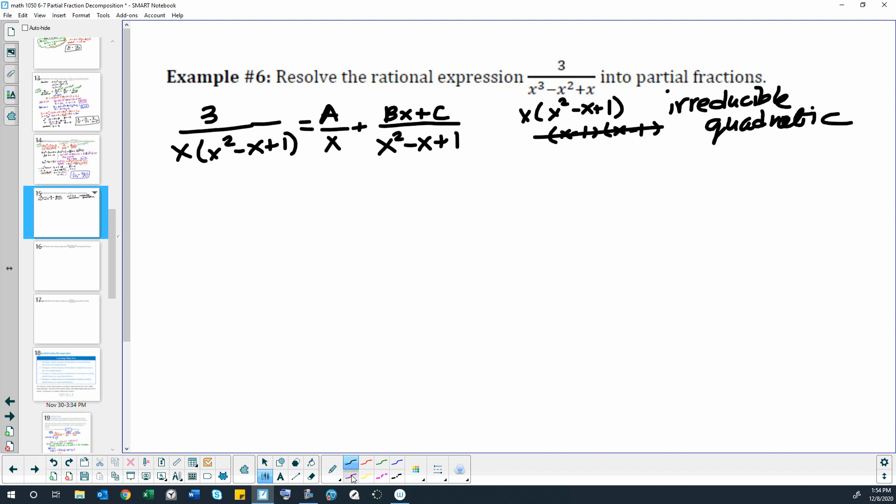Okay, then we multiply by our least common denominator. We get 3 over here, we get a times x squared minus x plus 1 here, and then we get bx plus c times x there. So I really didn't write this out very well, but here's our least common denominator.